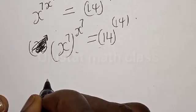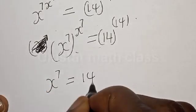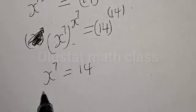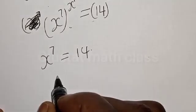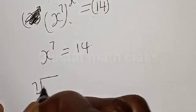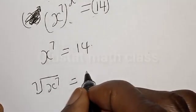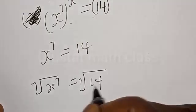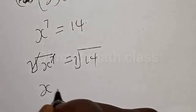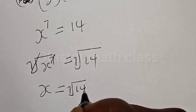We have s raised to power 7 is equal to 14. From here we are going to solve in two ways. Now let's take the seventh root of both sides: seventh root of s raised to power 7 is equal to the seventh root of 14. This cancels, giving us s is equal to the seventh root of 14.